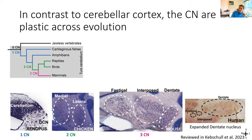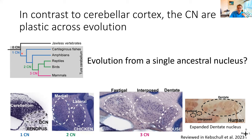Looking at the cerebellum from an evolutionary perspective, while the cerebellar cortex changed in size dramatically across lineages, the crystalline cortical motif of granule cells, Purkinje cells, et cetera has been maintained. Where the real action has been is in the cerebellar nuclei: we have basically no nuclei in jawless vertebrates; in cartilaginous fish and amphibians, a single cerebellar nucleus; in reptiles and birds, two; and in mammals, three. It really seems like the cerebellar nuclei evolved from a single ancestral nucleus in the last common ancestor of jawed vertebrates, and this expansion paralleled the functional expansion of the cerebellum.